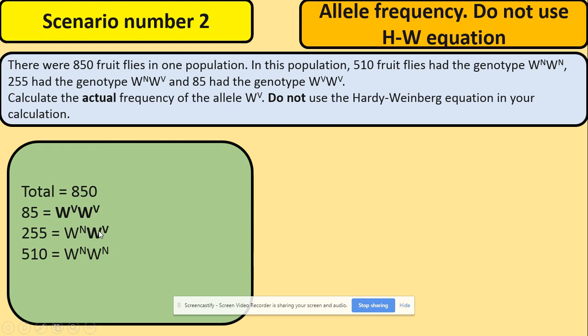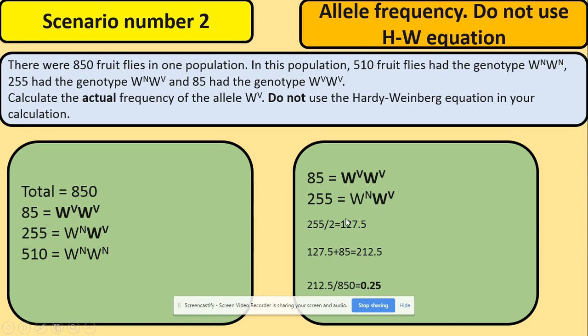So what do we need to do with that 255? We need to divide this by 2 to work out only the frequency from there. So once you've got that, we're adding this to 85 which will give us 212.5. And we divide that total, that number by the total number of the fruit flies in the population. So the answer for this question is 0.25.